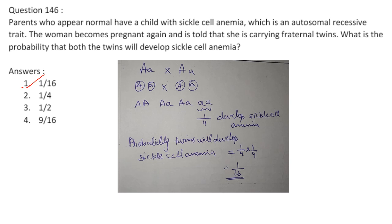Parents who appear normal have a child with sickle cell anemia, an autosomal recessive trait — both parents are carriers. The woman is carrying fraternal twins. The probability that both twins will develop sickle cell anemia is 1/4 × 1/4 = 1/16. Answer is option 1.